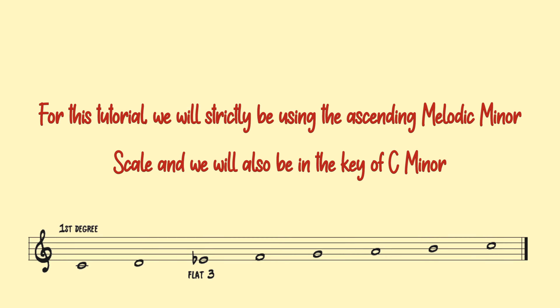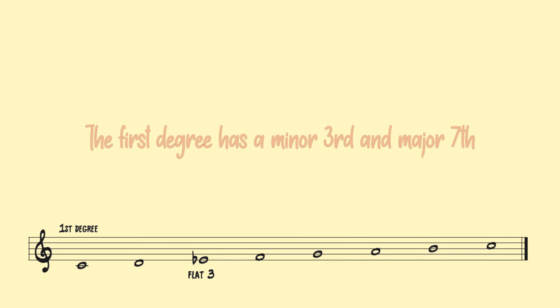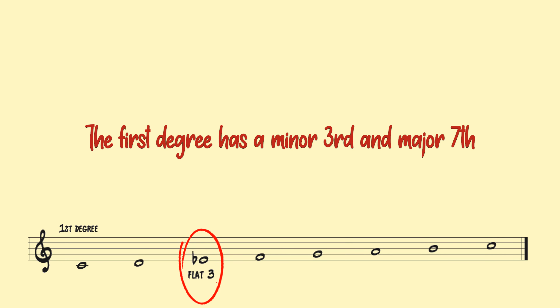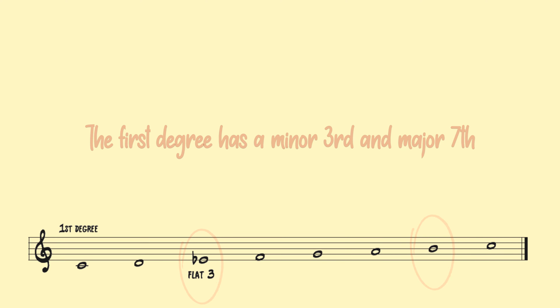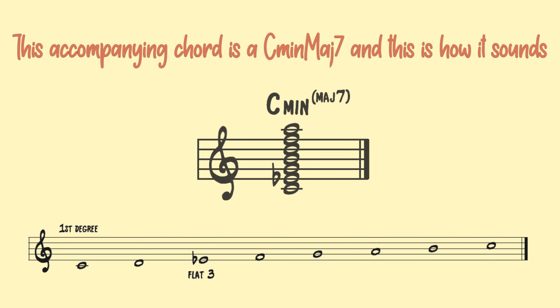For this tutorial we will strictly be using the ascending melodic minor scale and we will also be in the key of C minor. The first degree has a minor 3rd and a major 7th. This accompanying chord is a C minor major 7, and this is how it sounds.